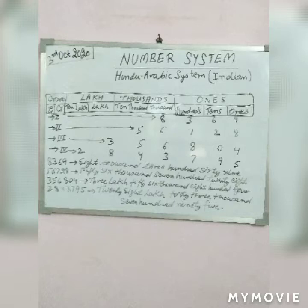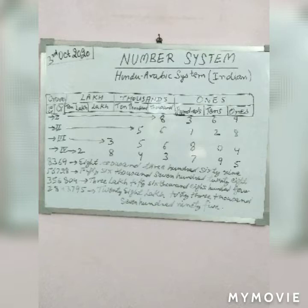To write any number in this system, we have to use commas to separate the periods. As you see in the example, we have four numerals. The first one is 8,369. Next is 56,728. Next is 3,56,804. Next is 28,43,795.